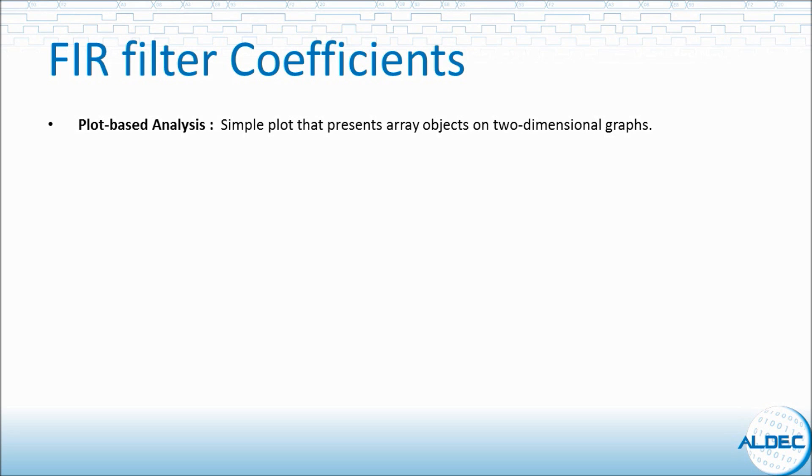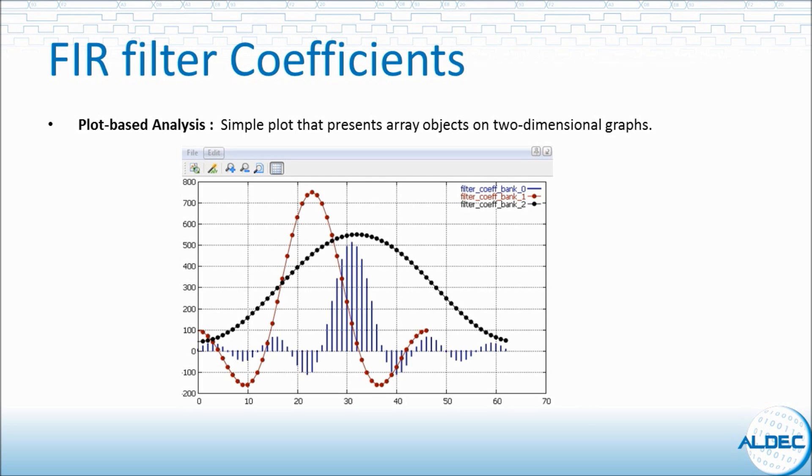In a plot based scenario, the user needs to only create a simple plot that presents the array objects on two dimensional graphs. As you can see, this representation allows you to easily see the filter coefficients. Also, you will be able to add multiple arrays to the same plot in order to compare different filter types at once. The x-axis here represents the index of the array and the y-axis the value of the corresponding element.